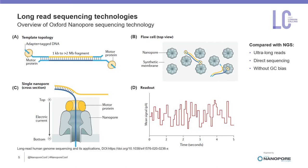Changes in current within the pore correspond to a particular k-mer, which is used to identify the DNA sequence. Compared with next-generation sequencing data platforms, advantages of ultra-long reads and direct sequencing strategy on the Nanopore device will significantly improve the performance of discovering structural variation, especially in repetitive genomic regions.